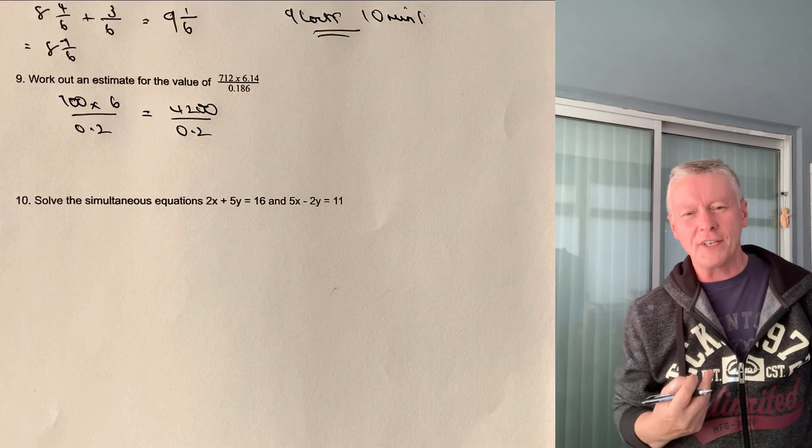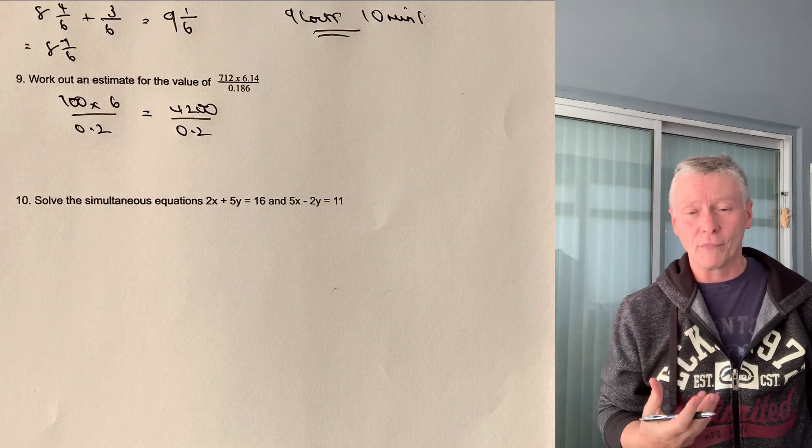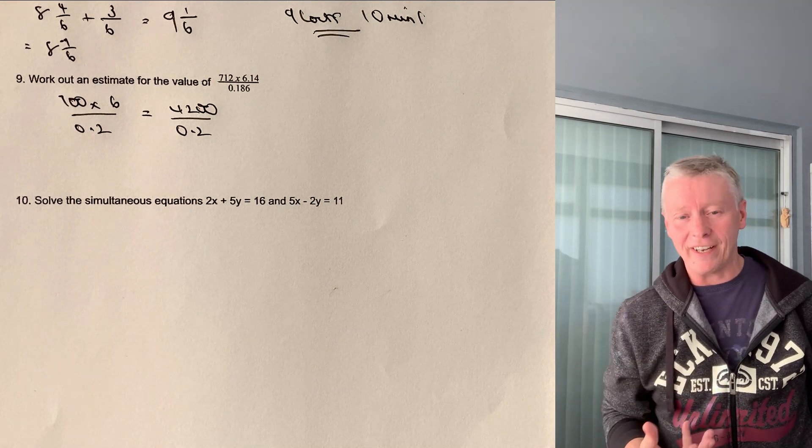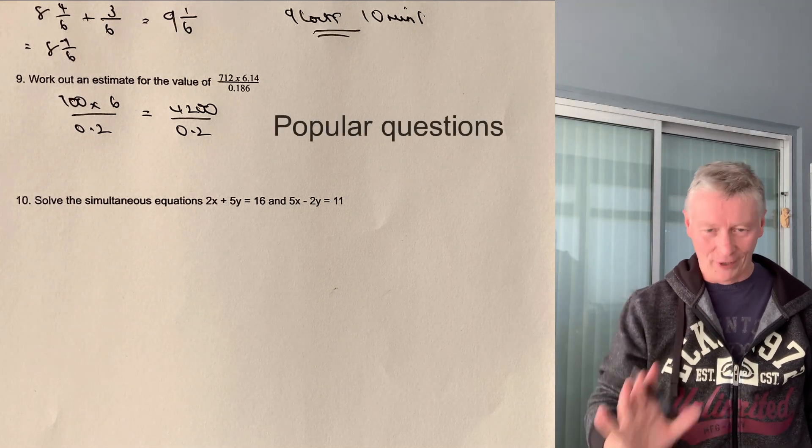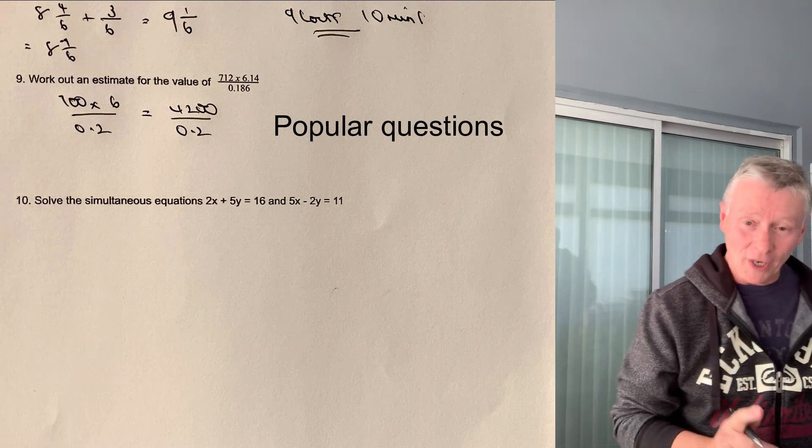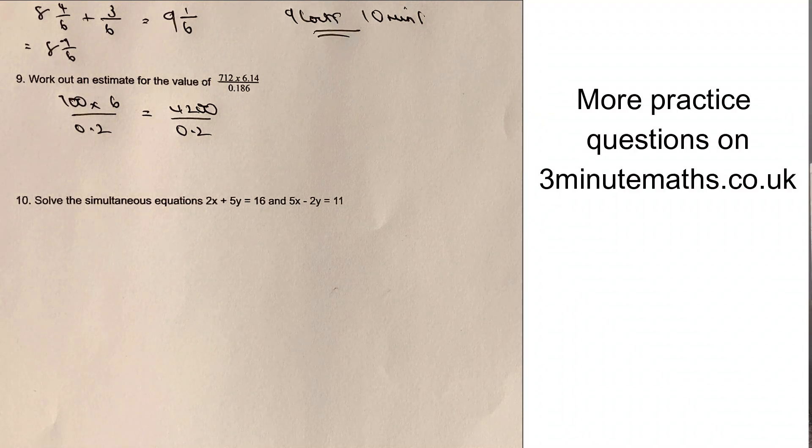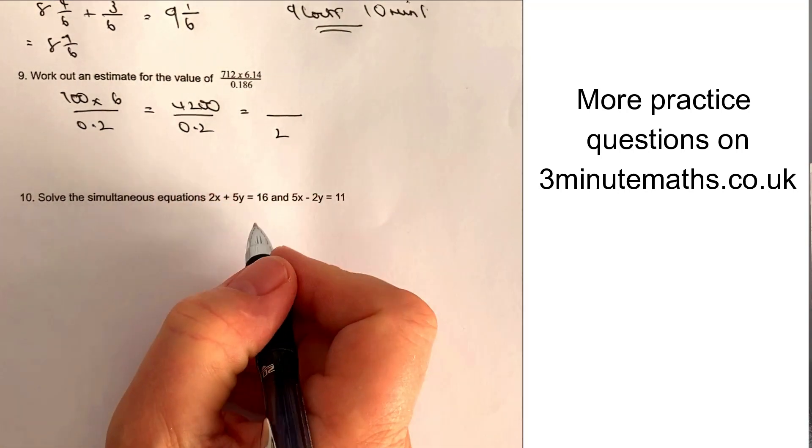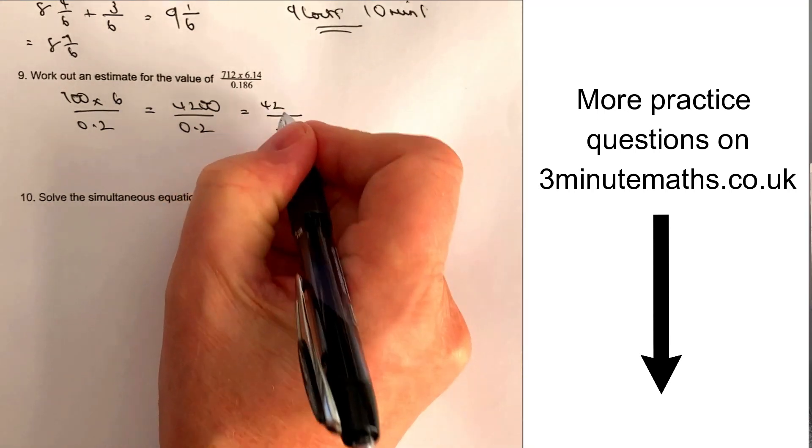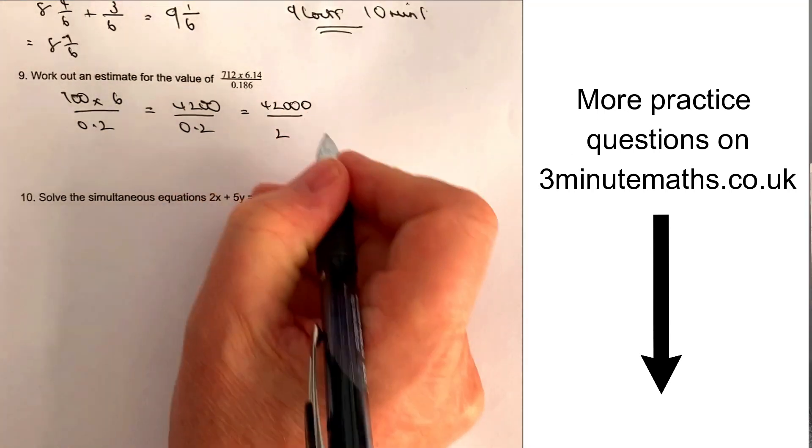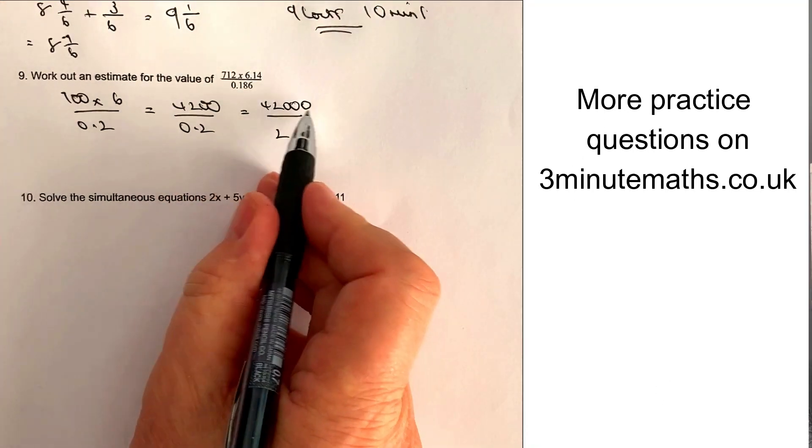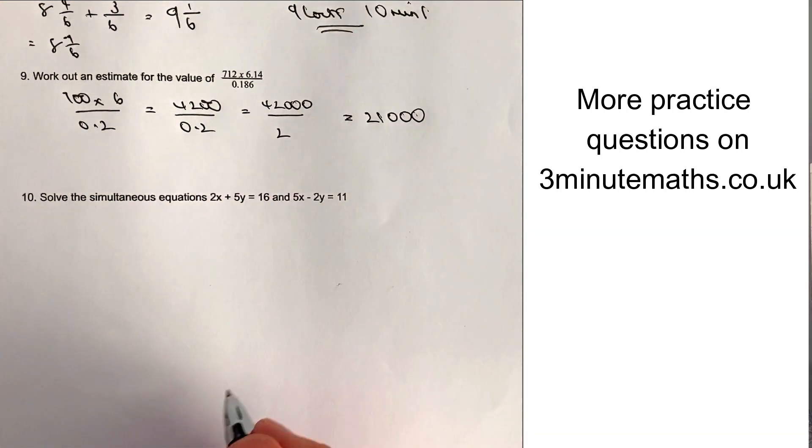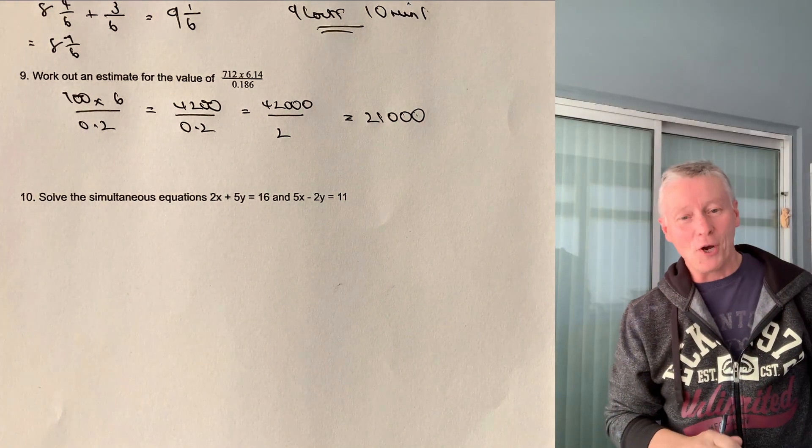So 700 times six is going to be 4200 divided by 0.2. Now, the problem there is you're dividing by a decimal. So we've got to make that a whole number. The way we're going to do that is we're going to multiply the denominator by 10. If we do that, we're going to multiply the numerator by 10 as well. But it does make the calculation a lot easier. So 0.2 multiplied by 10 is going to be 2. And the numerator multiplied by 10 is going to be 4200 with an extra 0 on the end. Now, 42,000 divided by 2 is 21,000, which is actually the answer to this particular question.